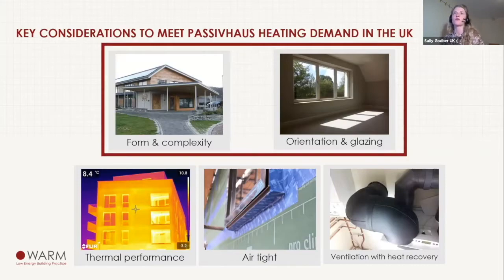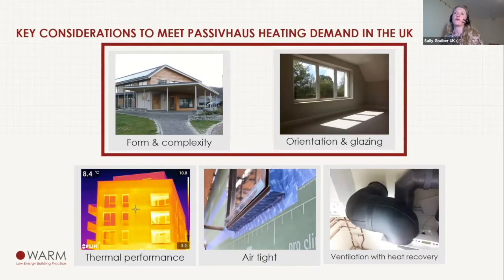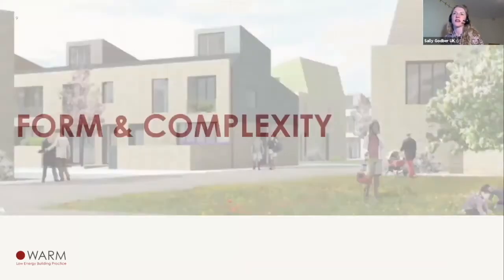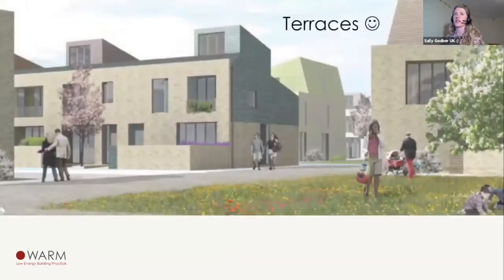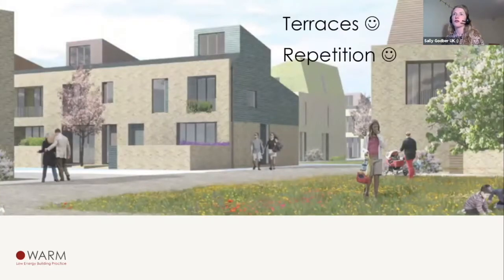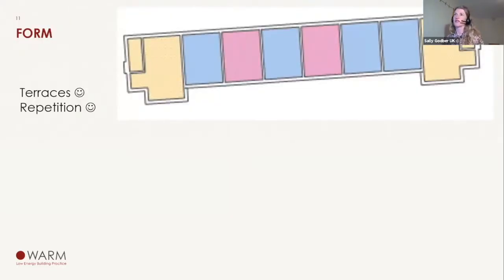There's a load of stuff that goes into the design from a passive house perspective, but I'm going to pick the two real big hitters: form and complexity, and orientation and glazing. Kicking off, this was the original scheme. Terraces, definitely a thumbs up from us, and a lot of repetition which was a great starter.